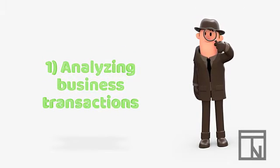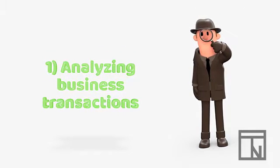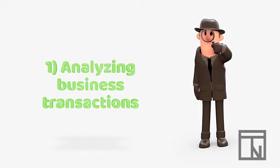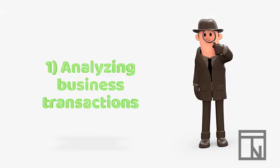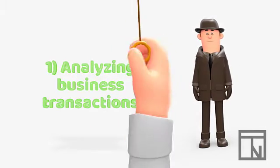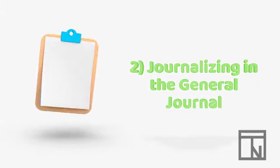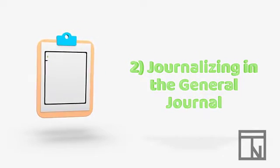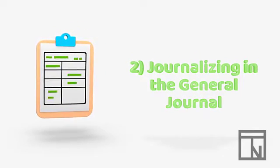The accounting cycle begins by analyzing business transactions. This is where we determine which events in the business need to be recorded in our accounting records, where, and how. Then the events get recorded in a special accounting record called a general journal.